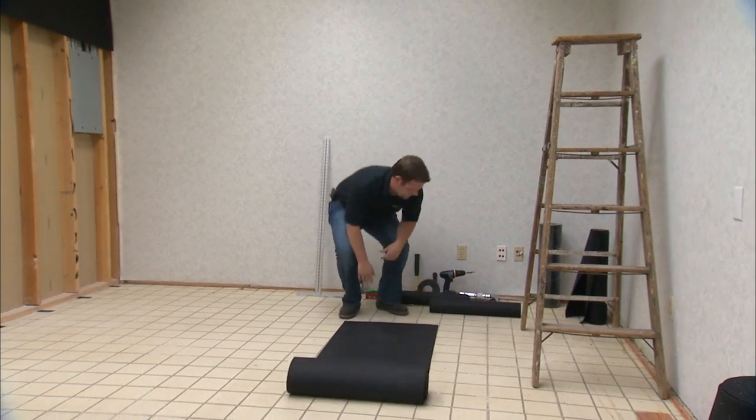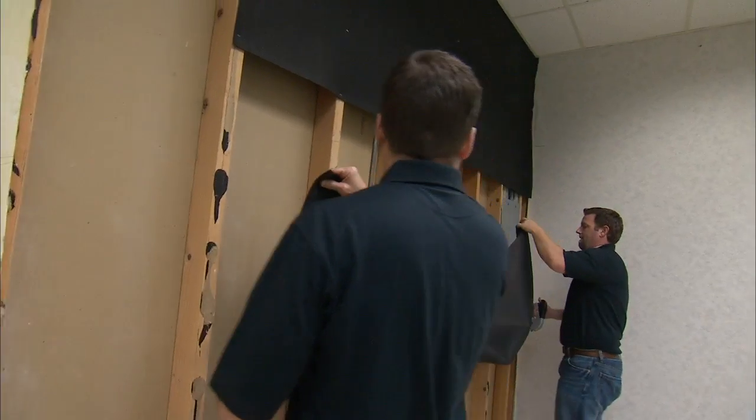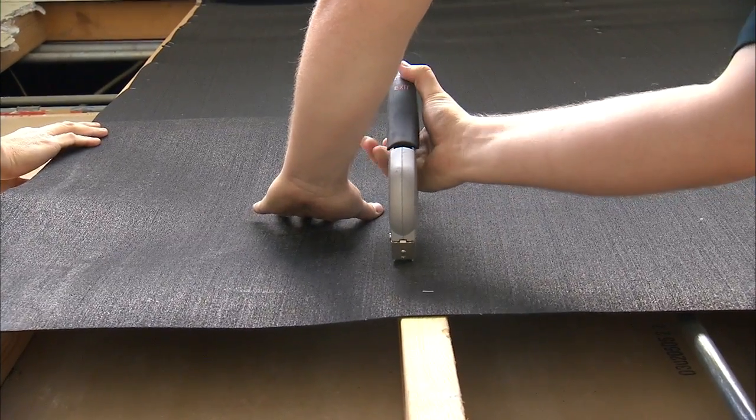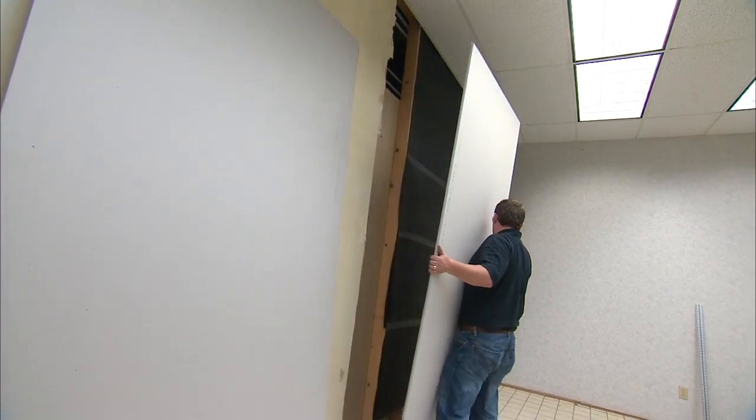In this video, we will demonstrate a typical wall installation of Peacemaker. Peacemaker is applied directly over wood or metal studs in single or multiple layers, followed by typical drywall installation directly on top.